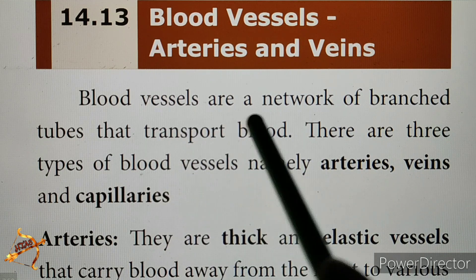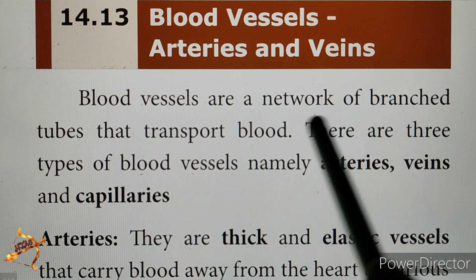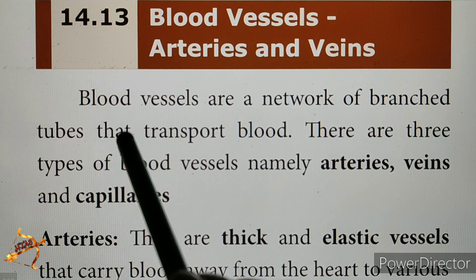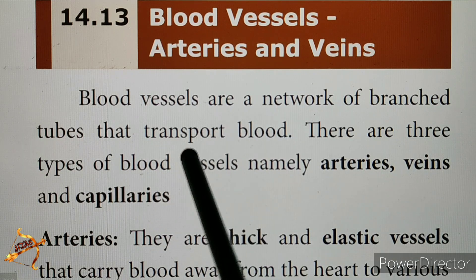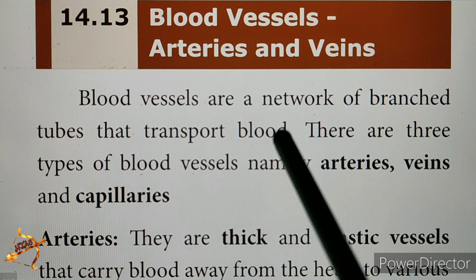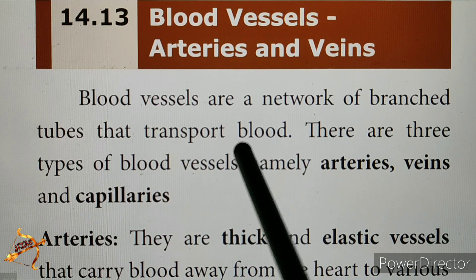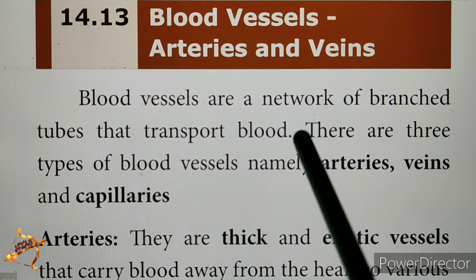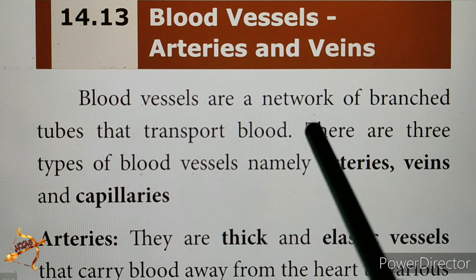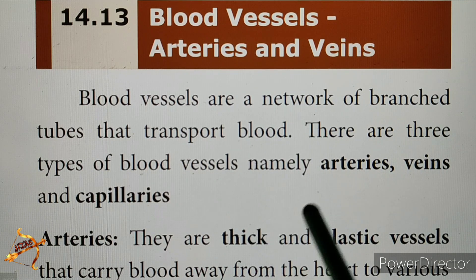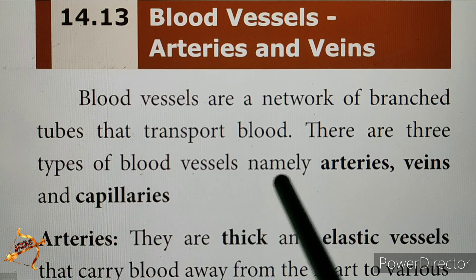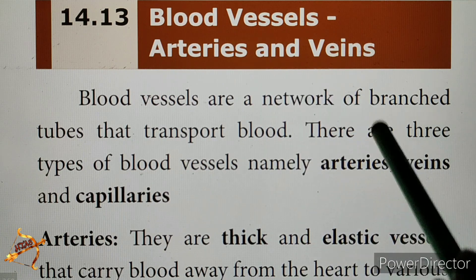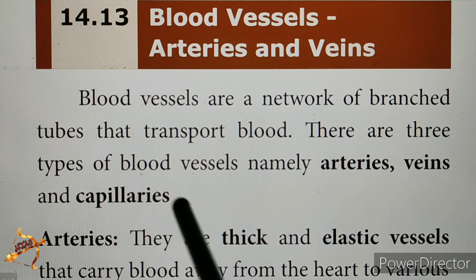Blood vessels are a network of branched tubes. They form a network of blood connected throughout the body. There are 3 types of blood vessels.